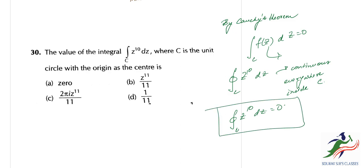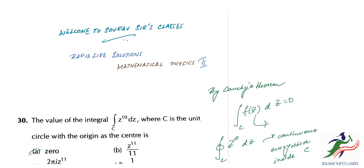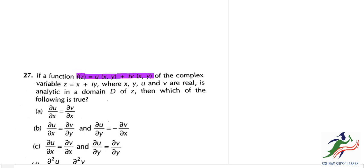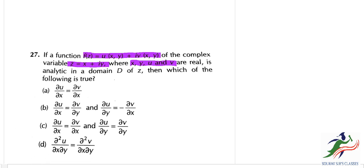Moving on: if a function f(z) equals u(x,y) plus i·v(x,y) of the complex variable z, where x, y, u, and v are real, is analytic in a domain D of z, then which of the following are true?